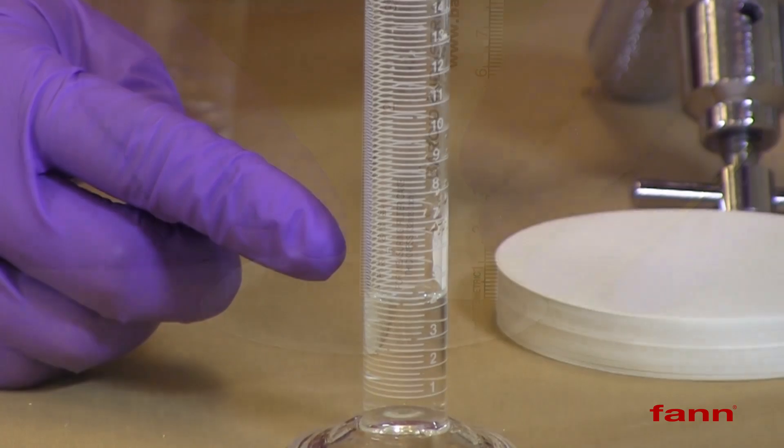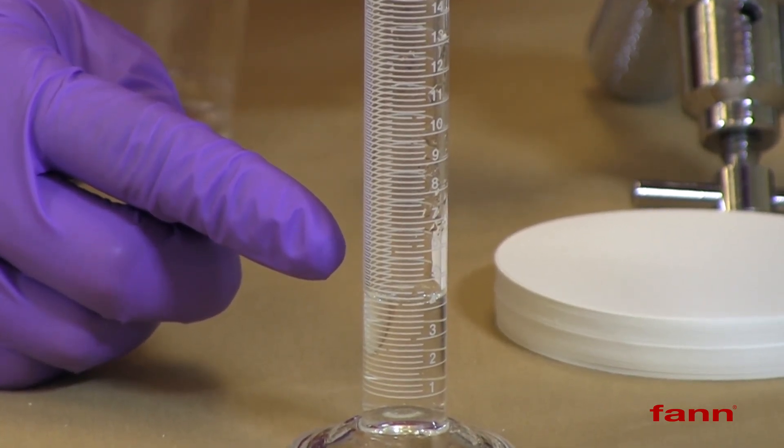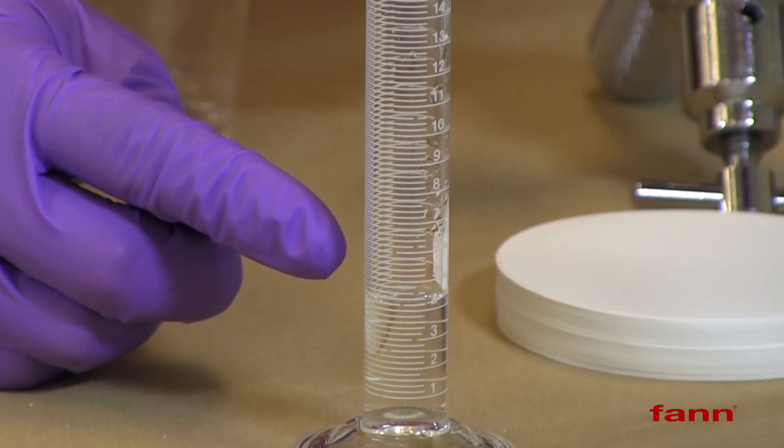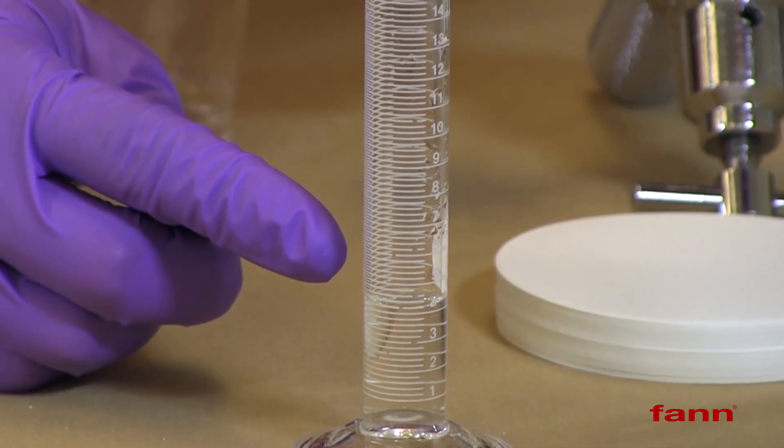Read the filtrate volume in the graduated cylinder to the nearest one-tenth of a milliliter. The filtrate volume here is 4.2 milliliters for 30 minutes.